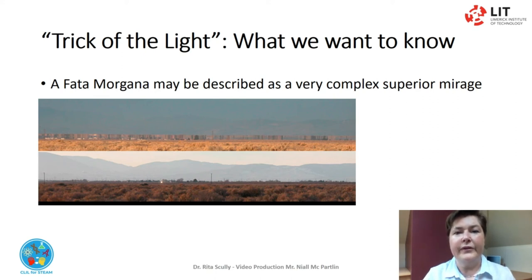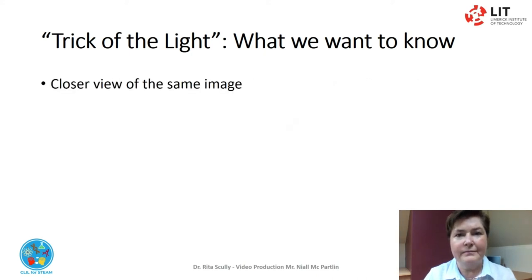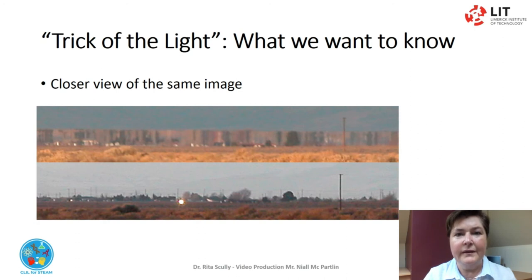In order to be able to see the detail in them, they are best viewed through binoculars or a telescope, or in this case, with a telephoto lens. Here the top image is the mirage, and the lower image is without the Fata Morgana mirage. Here we'll see the same view much closer — again, the top image is the Fata Morgana mirage and the lower image is without the mirage. This sequence of Fata Morgana of Farallon Islands shows how Fata Morgana is changing constantly.